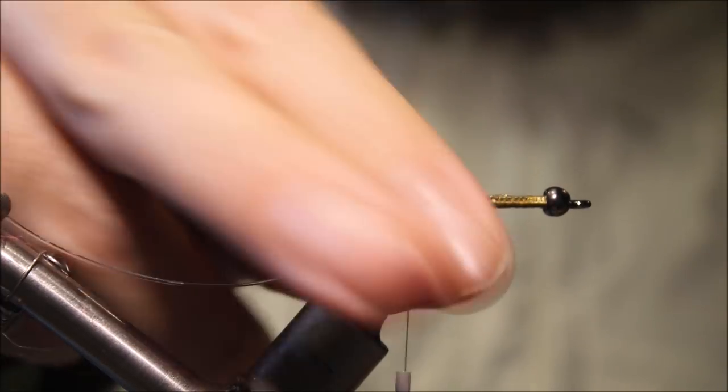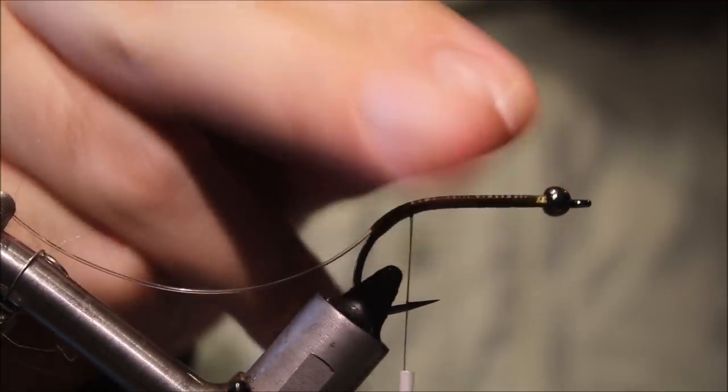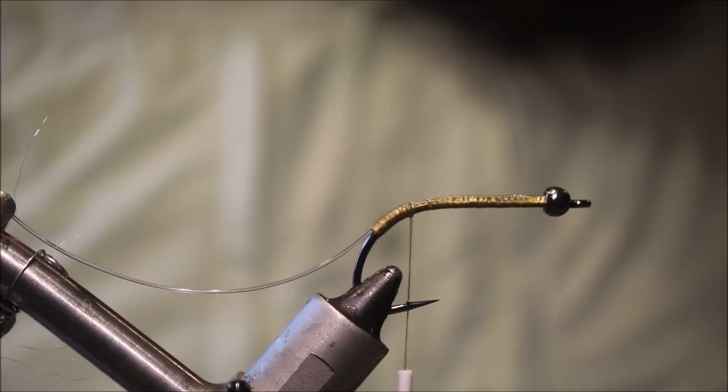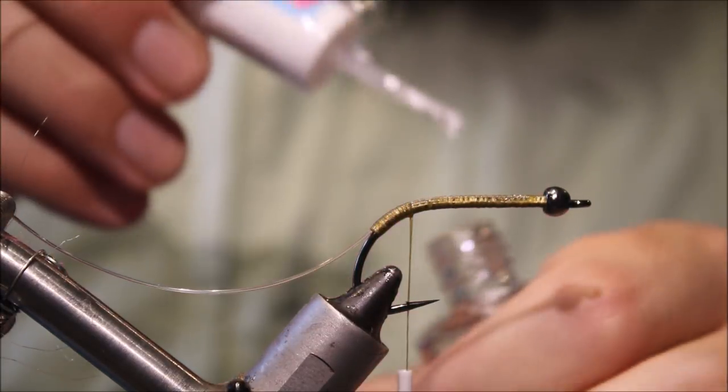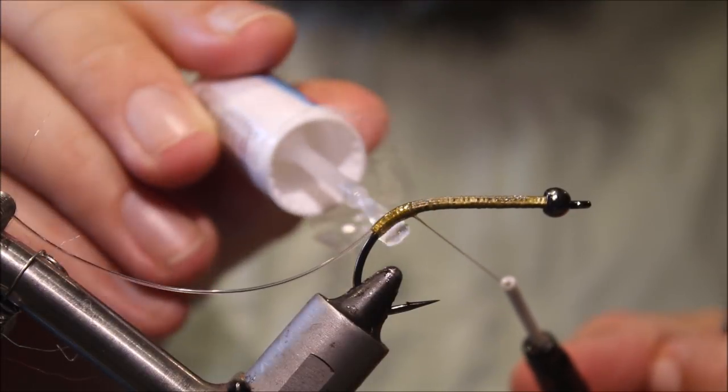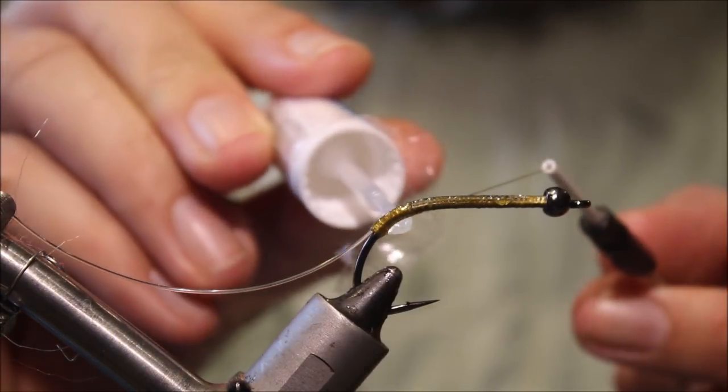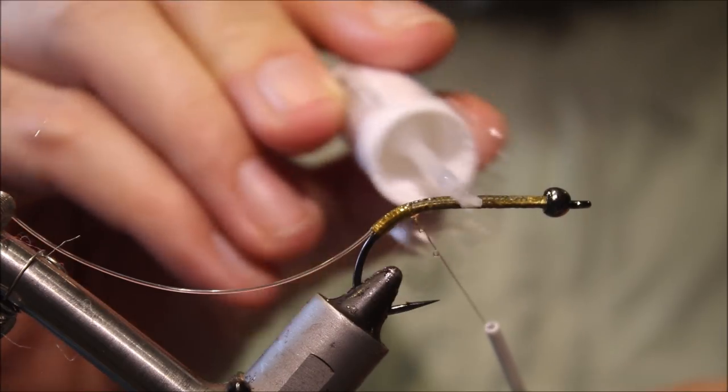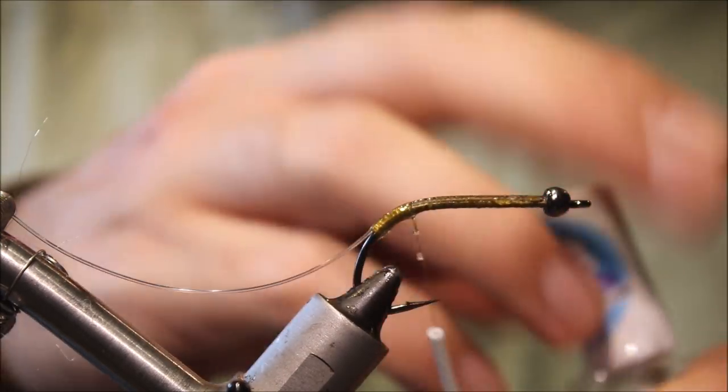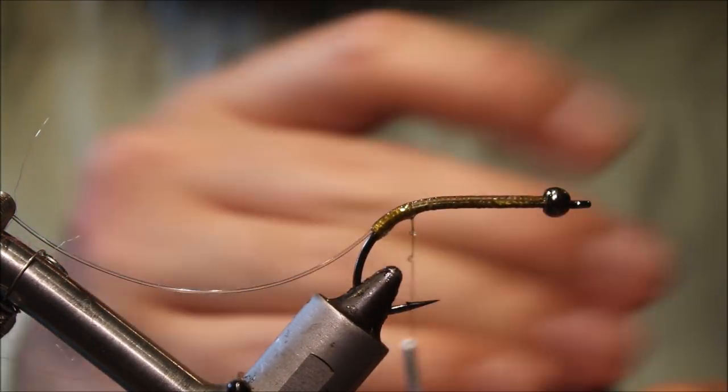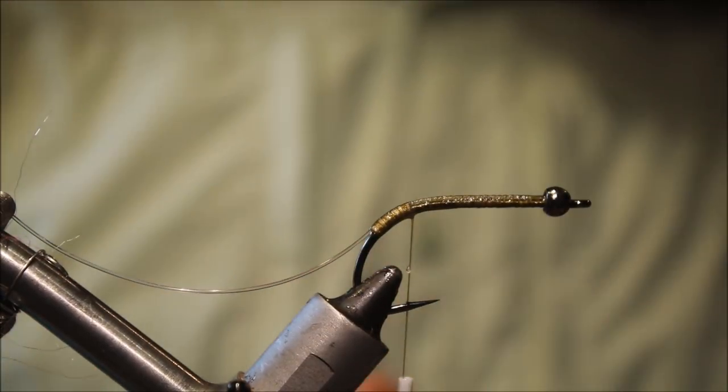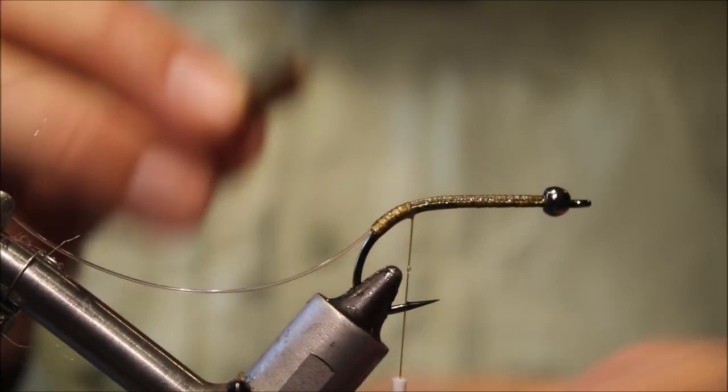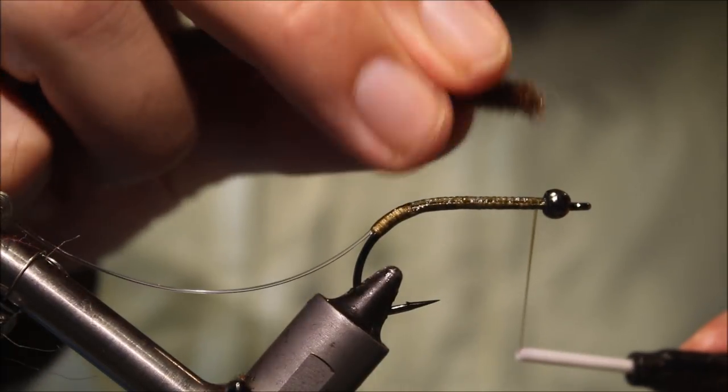So, that super glue should be just about dry, just tap away any excess, and then I come in with some head cement. And if you coat super glue with head cement, you get a very hard, very durable finish. So it's well worth adding for an exposed weed guard tie-in point. Really makes for a tough fly. Take my thread back to the front.